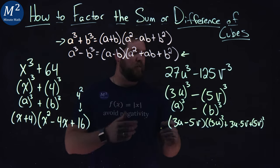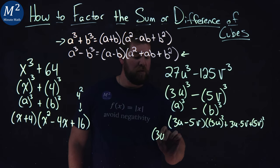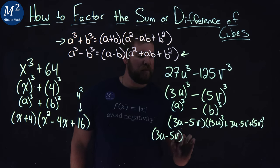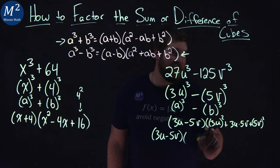So let's go rewrite it all here. I'll slide it over a little. We have a 3u minus 5v. Doesn't need to be simplified. But let's go simplify down here.